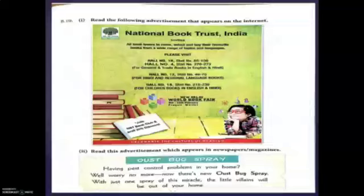The second advertisement appears in a newspaper or magazine. In magazines or newspapers you see this type of advertisement: 'Oust Bug Spray — having pest control problems in your home? Well, worry no more! Now there is the new Oust Bug Spray. With just one spray of this miracle, the little villains will be out of your home.' So these are two different types: one is for the internet and the other is for magazine or newspaper.